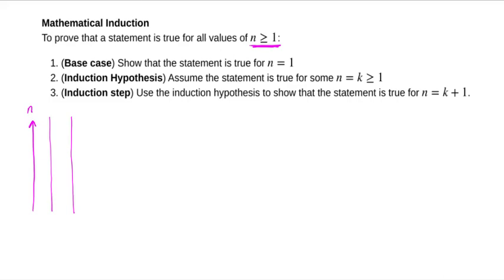The first step of the induction process is to prove what's called the base case. You have to get on the ladder — step onto it. When n equals 1, we show that our statement is true. It doesn't always have to be n equals 1; sometimes it's 2, 3, or 4. But you prove the first case. So when n equals 1, you get on the ladder.